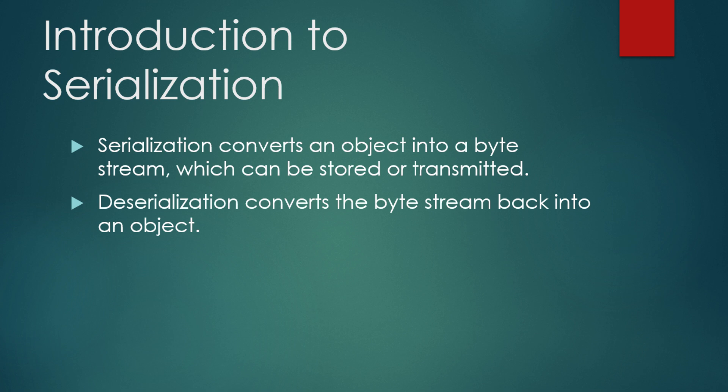Serialization is the process of converting an object into a byte stream, which can then be written to a file or sent over a network. Deserialization is the reverse process, converting a byte stream back into an object.